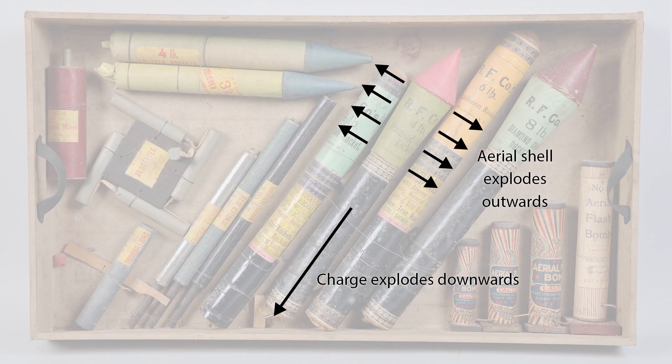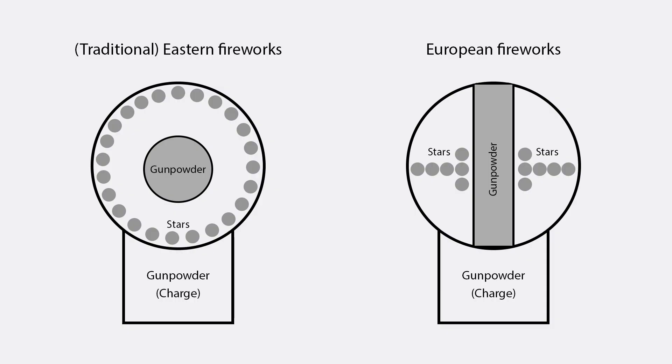The gunpowder contained in the aerial shell acts in a manner similar to the gunpowder in the charge. However, the aerial shell explodes outwards, instead of directionally like the charge. In traditional eastern fireworks, gunpowder was packed in the center of the shell, with stars placed around it. In European fireworks, and most modern fireworks, the stars are placed in different configurations to create designs with the stars, instead of the spherical effect achieved by traditional eastern fireworks.